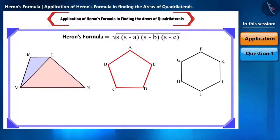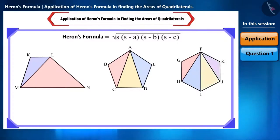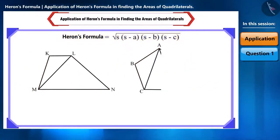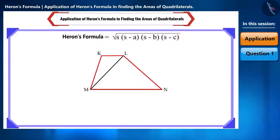Similarly, we can divide this pentagon into three triangles. And if we know the length of the diagonal and the sides of all these figures, then using Heron's formula, we can easily find the area of all these figures. In this session, we will apply Heron's formula to find only the areas of quadrilaterals.